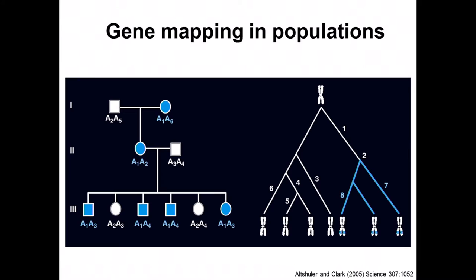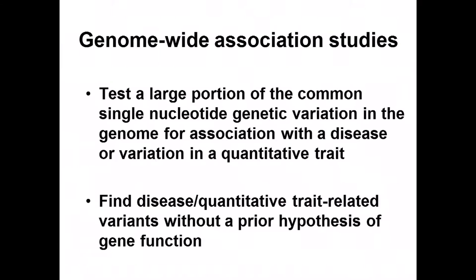The same principle applies to looking for variants in populations, but the timescale is often longer. The individuals who have inherited a risk allele are present in the present day and may share a common ancestor many generations ago, where a mutation arose that was then inherited together. More time has passed, more recombination events have occurred around that initial variant, so the region around the risk allele is probably smaller in this setting than in a three-generation setting.